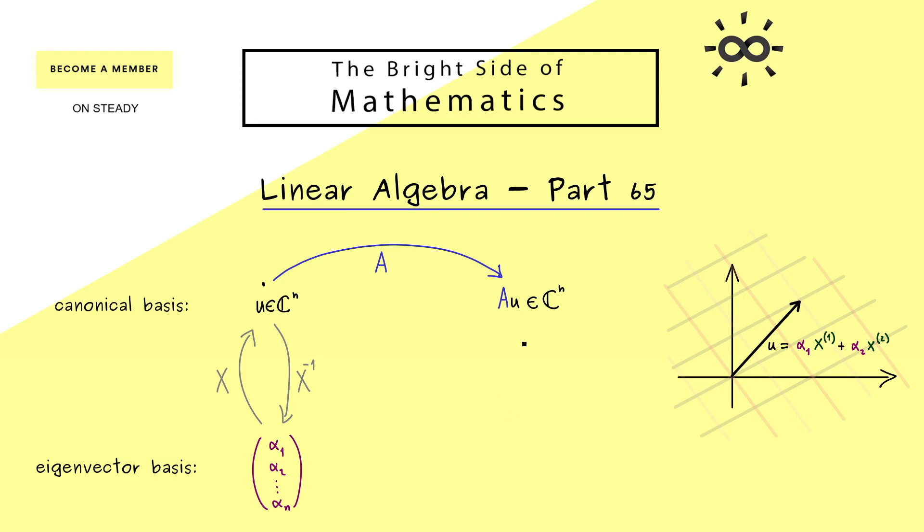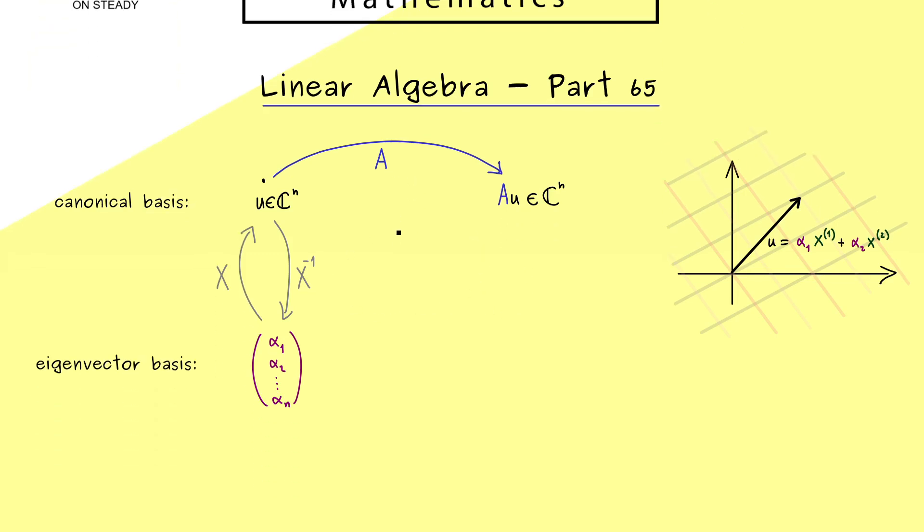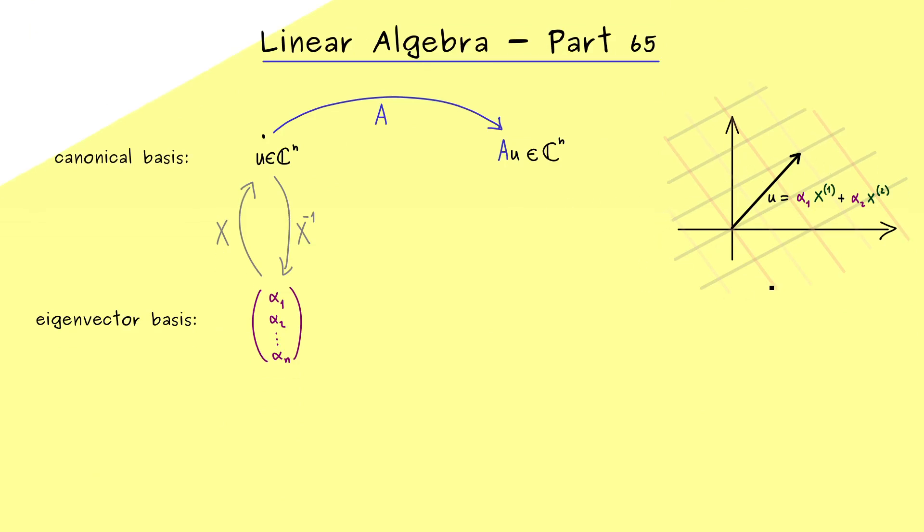So here for example, let's say we have two eigenvectors x1 and x2. So you could say we can transform u into another basis. Let's call this the eigenvector basis, and then we just have the coordinates of our linear combination. And then you might already know, with the matrix X from the last video we can go back to our original u. This is simply because inside the columns of X we find our eigenvectors of A. Therefore the other direction will be our X inverse.